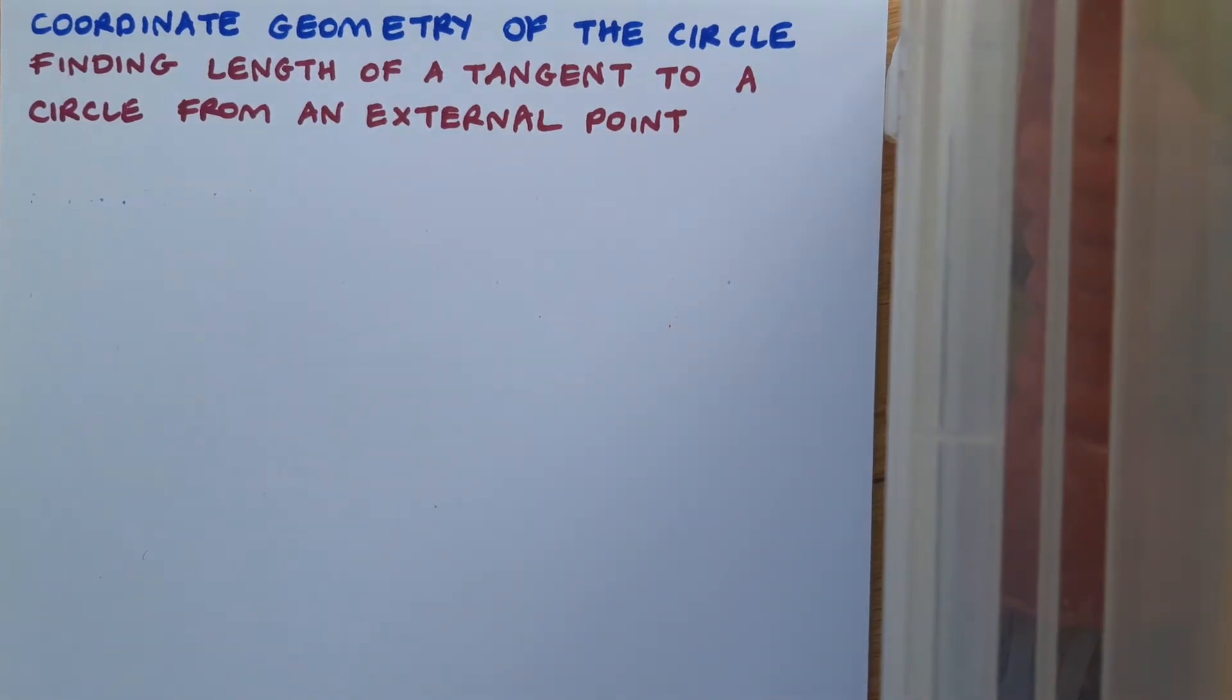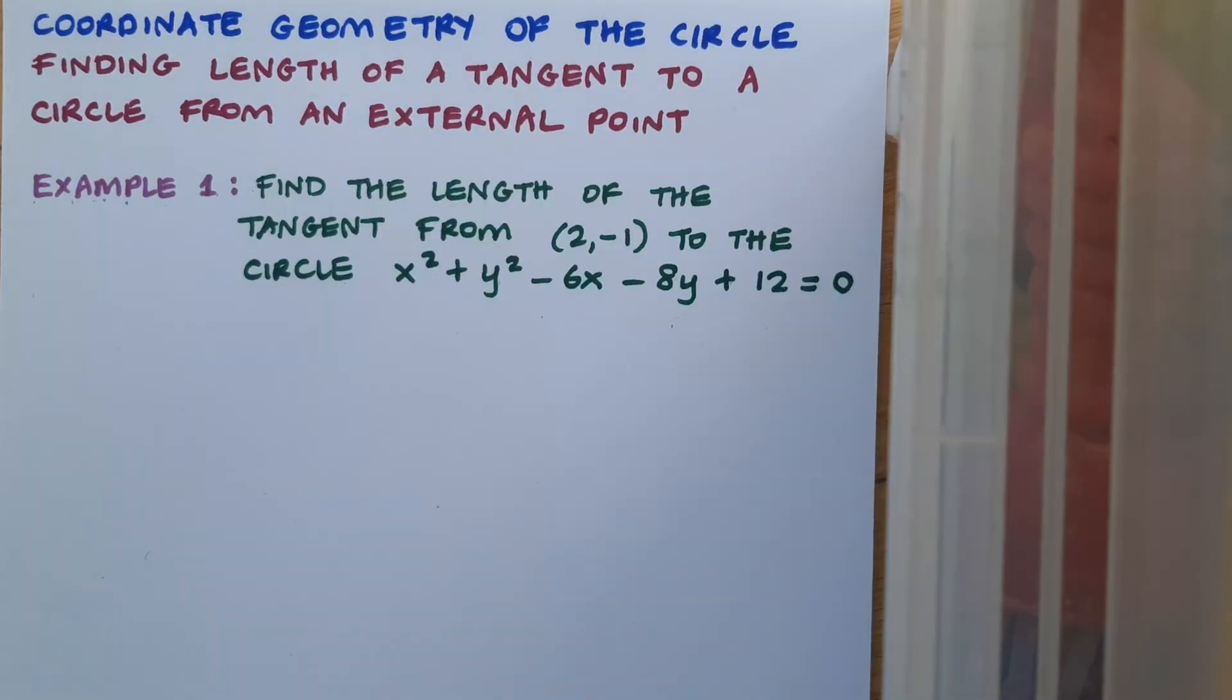So let's look at an example. I want to find the length of the tangent from the point (2,-1) to the circle x² + y² - 6x - 8y + 12 = 0.